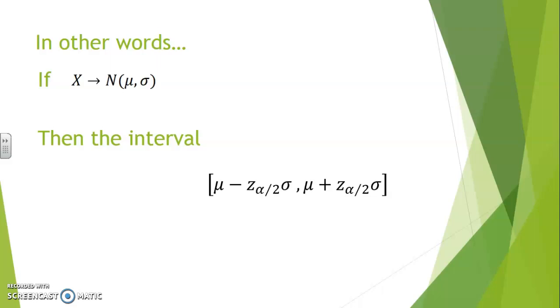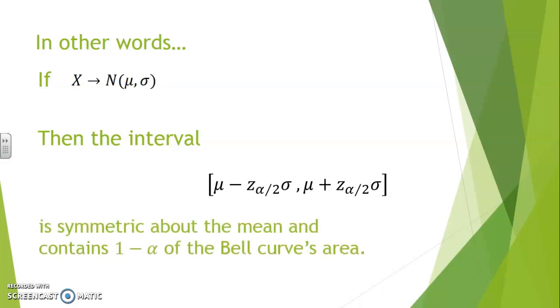Or add Z alpha over 2 multiples of sigma from the average value mu, then we will cut off Z alpha over 2 probabilities at both extremities and leave 1 minus alpha of the area.